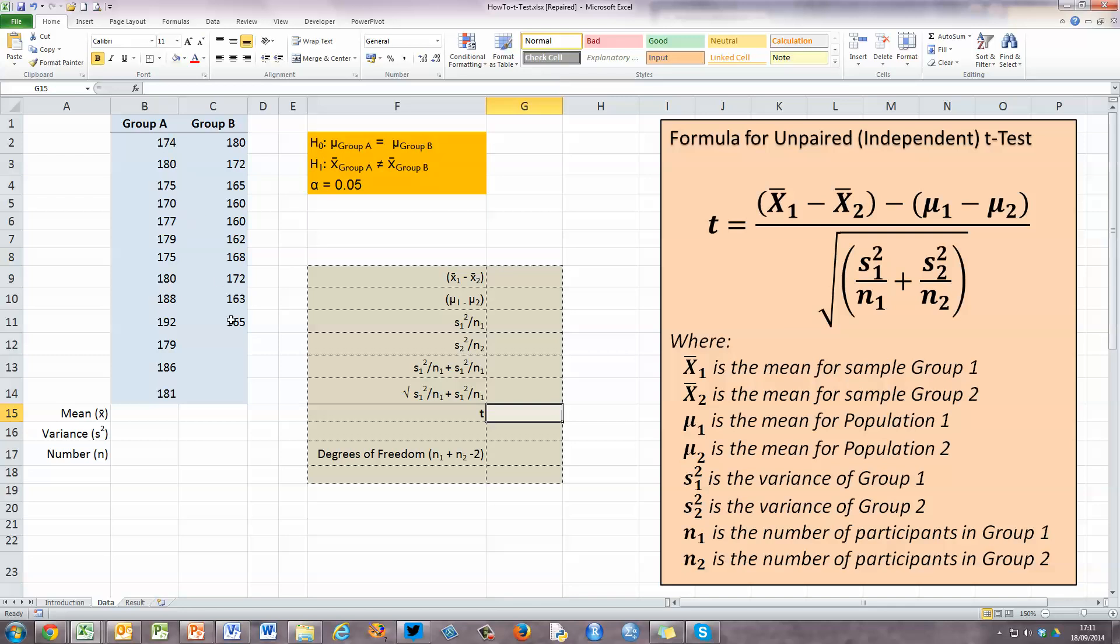Now over here on the left-hand side, I've got two samples. There's differences between these two groups, group A and group B, is what our focus is, what's being explored here. These could be, say, test results or something like that, and people have only been tested once. Each group is only tested once, and there are two groups. That means that the appropriate test statistic is the t-test for independent or unpaired means.